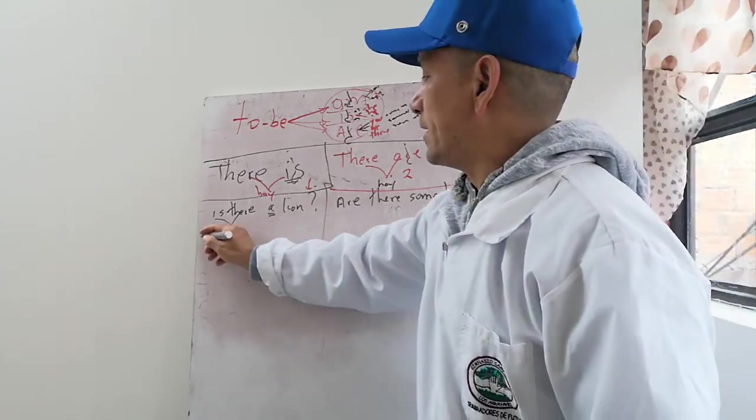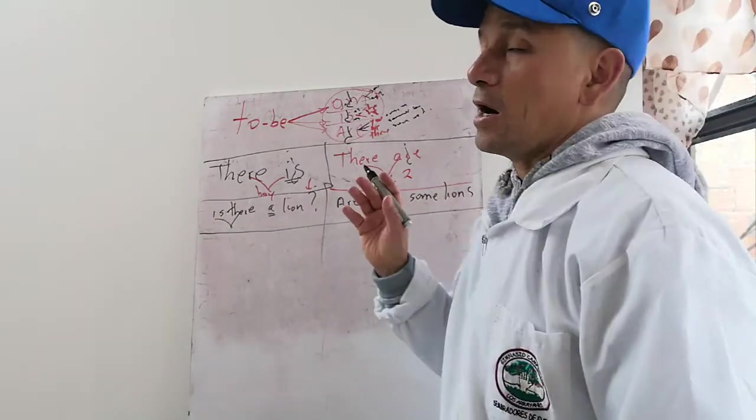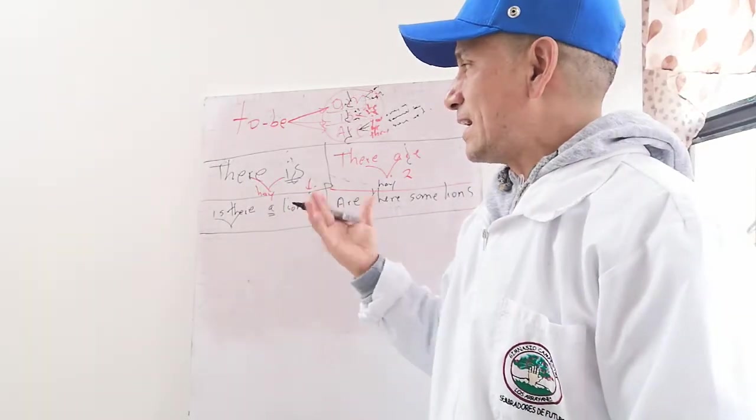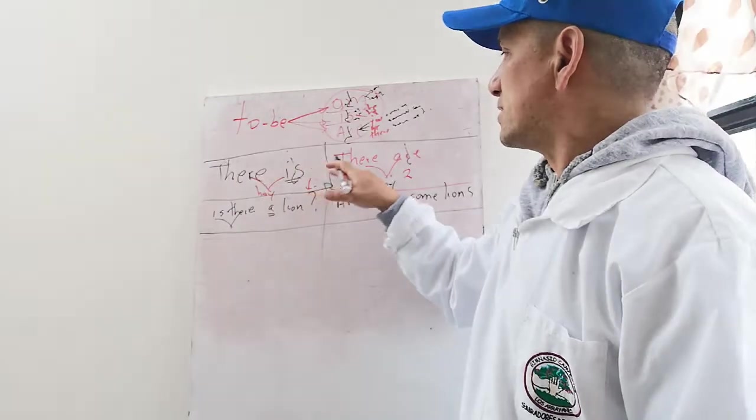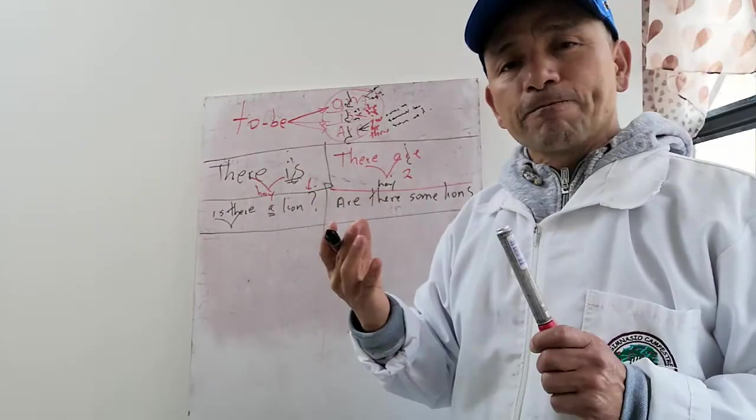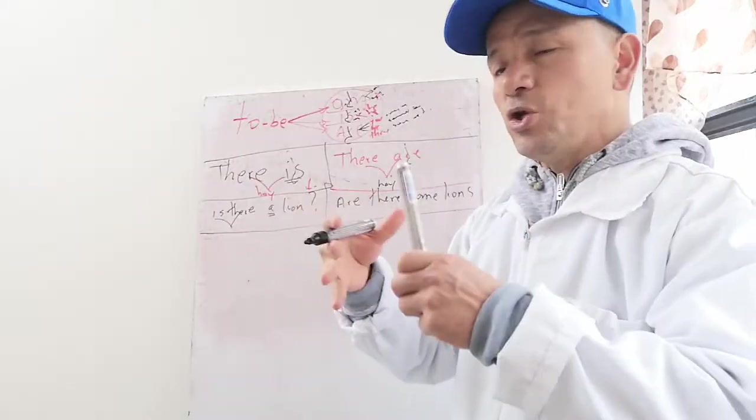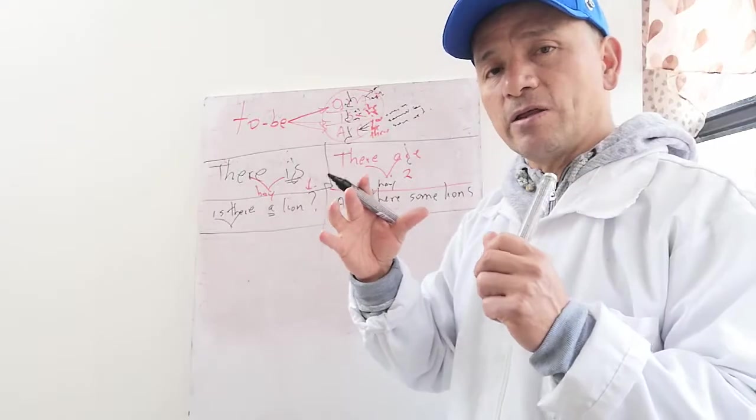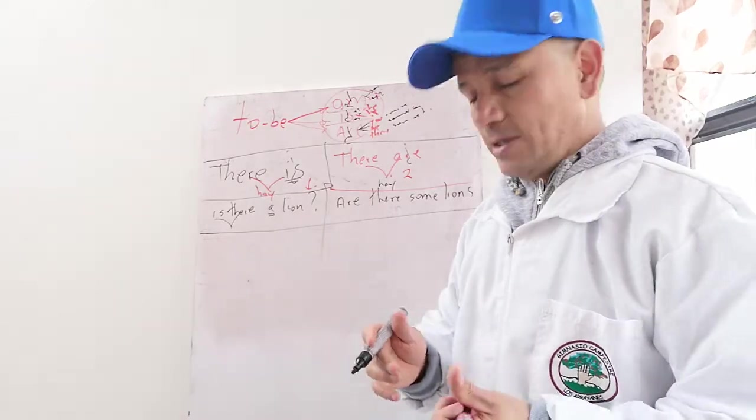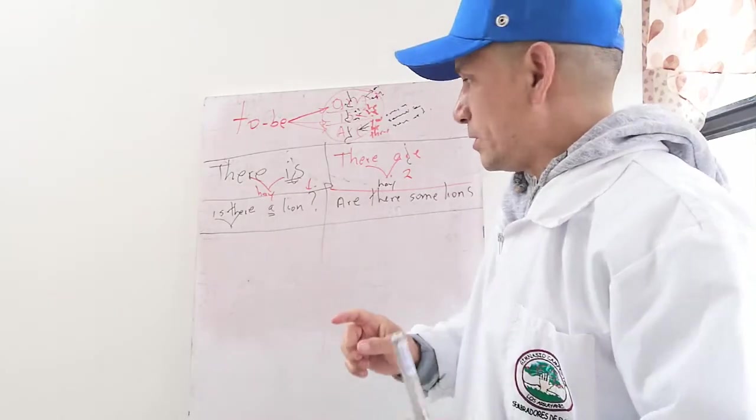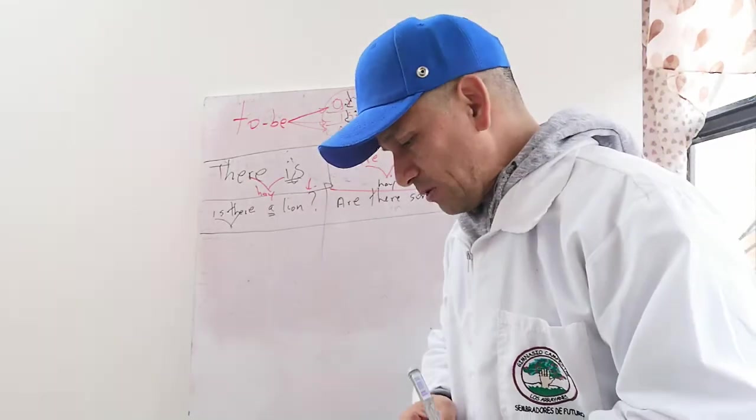Y ahí terminaríamos con el there is y there are. La clave es aprenderse las dos palabras there is, there are. Hay algunas ocasiones que se hace una unión muy rápida para hablar y se dice there's, there are.